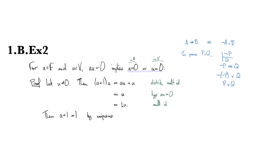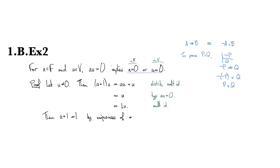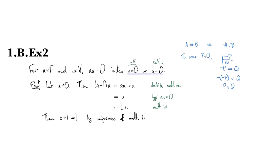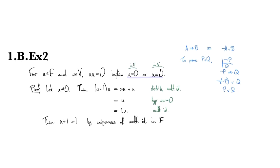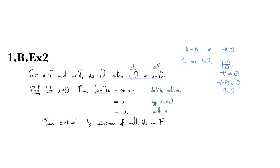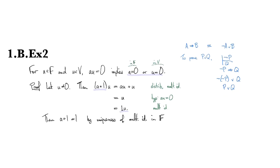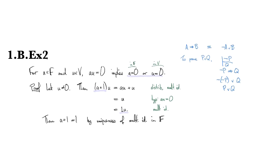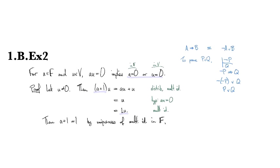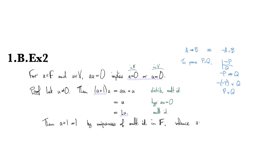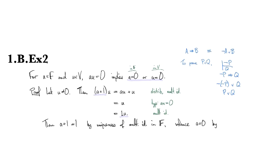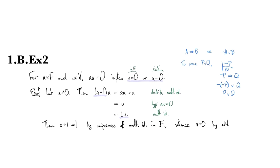By the uniqueness of the multiplicative identity in F, right, so I'm just comparing between this guy and this guy and this guy. So whence a has to equal zero by the additive identity property.